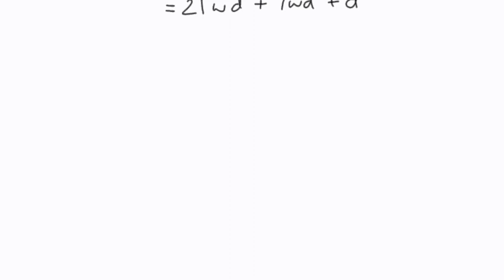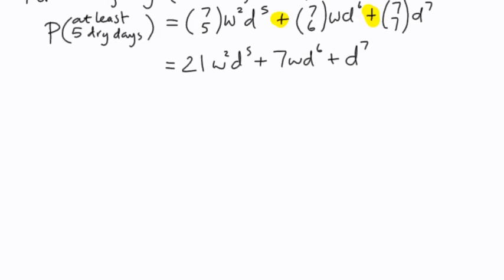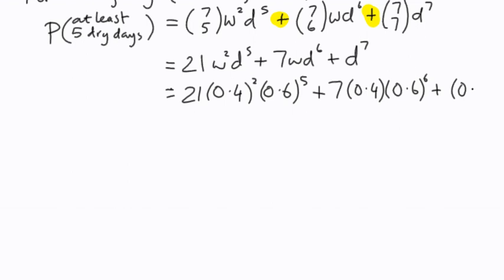Of course, we know what W and D are because we were told these represent our probabilities. So we can then substitute in the probability of a wet day is 0.4, and the probability of a dry day is 0.6. And if we then go through and substitute these in, we end up with these values here.